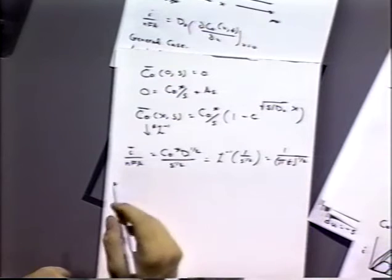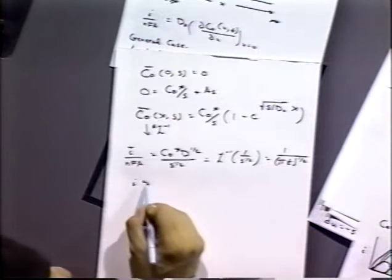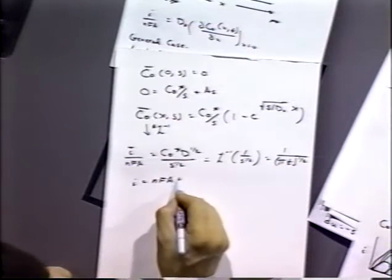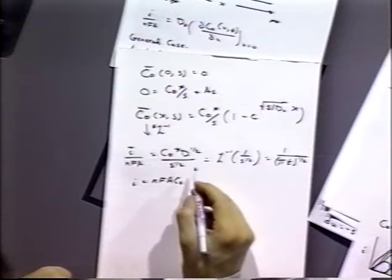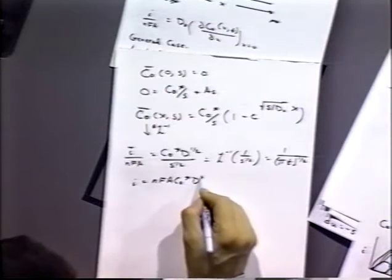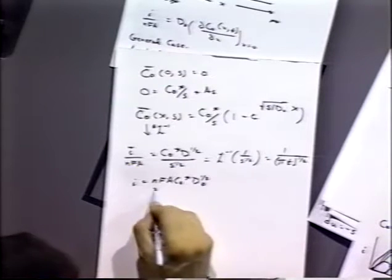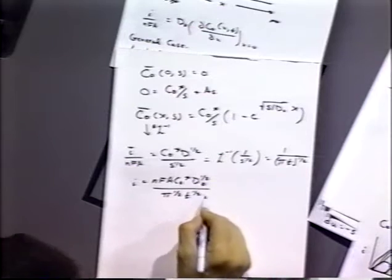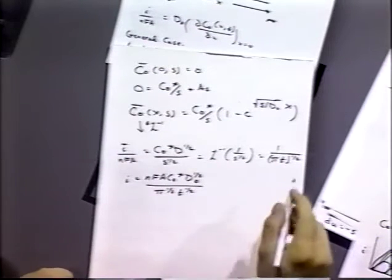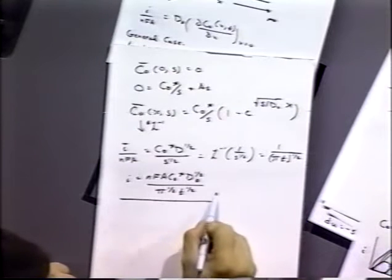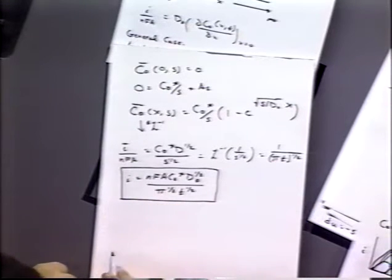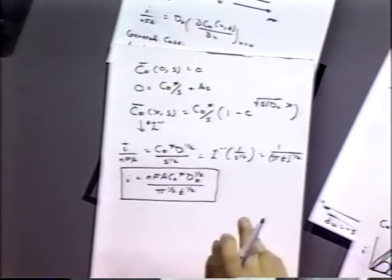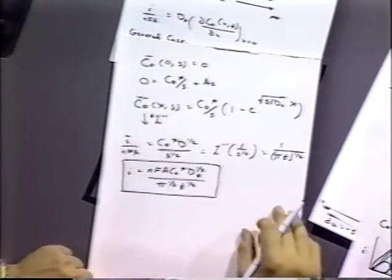Putting it all together, the current equals nFA·C*_O·D_O^(1/2) divided by π^(1/2)·t^(1/2). This is the Cottrell equation — an equation you should commit to memory, at least for as long as you're taking exams in electrochemistry.